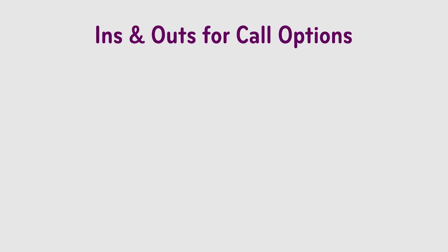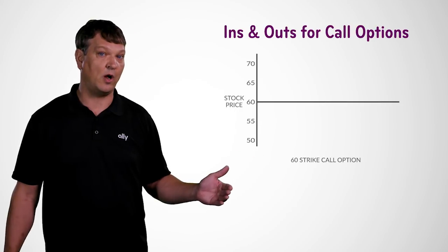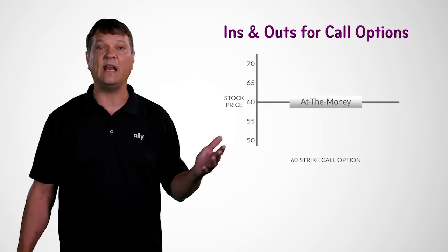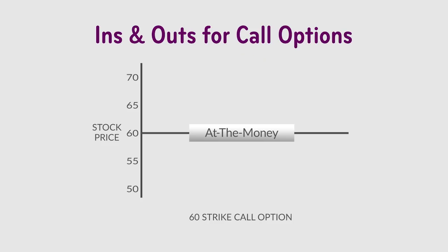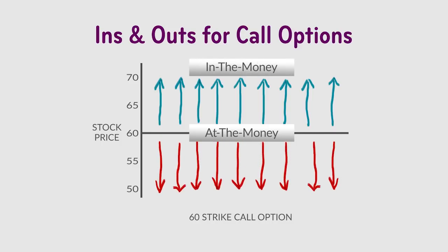On our graphic, the y-axis is the stock price going from 50 all the way up to 70. The x-axis is the strike price of our option contract. Today we're talking about a call option. Our strike price in this instance is a 60 strike call option. So if the stock is at 60 and the strike is 60, that's considered an at-the-money option contract. As the stock price starts going up, the 60 strike call becomes in the money. And if the stock price is going down, the call becomes out of the money.